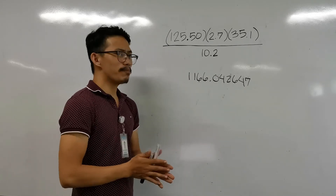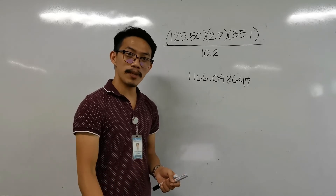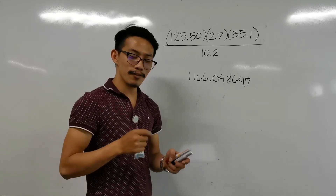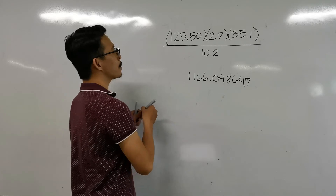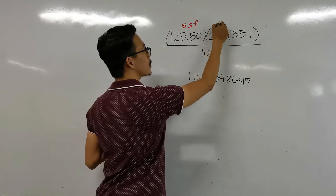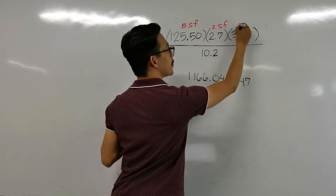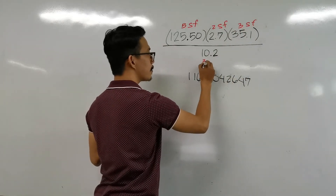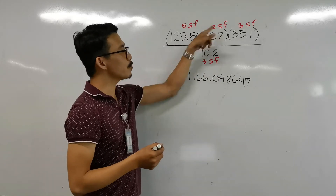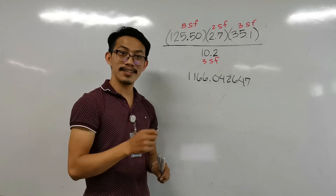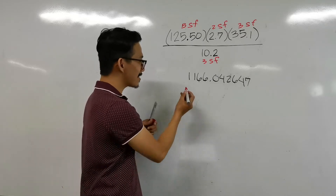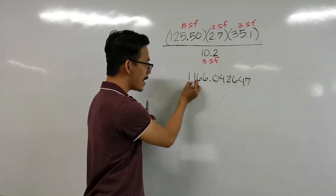Now, what would be our final answer? Take note, this is multiplication and division, and the rule is to follow the least number of significant figures. So we count: 125.50 has 5 significant figures, 2.7 has 2 significant figures, 35.1 has 3 significant figures, and 10.2 has 3 significant figures. The least number of significant figures is 2, so our answer must have 2 significant figures — counting 1, 2.